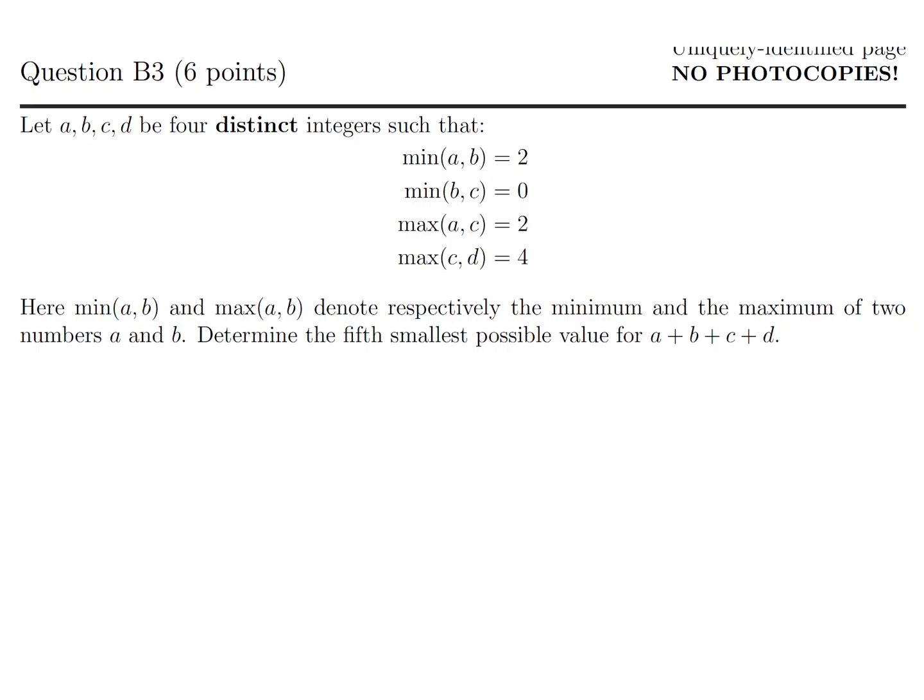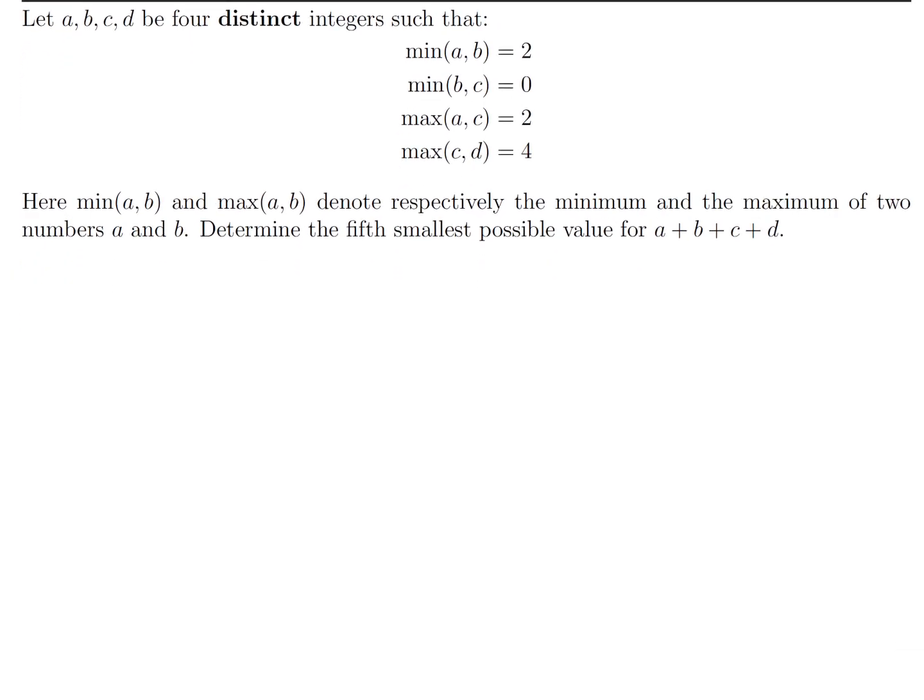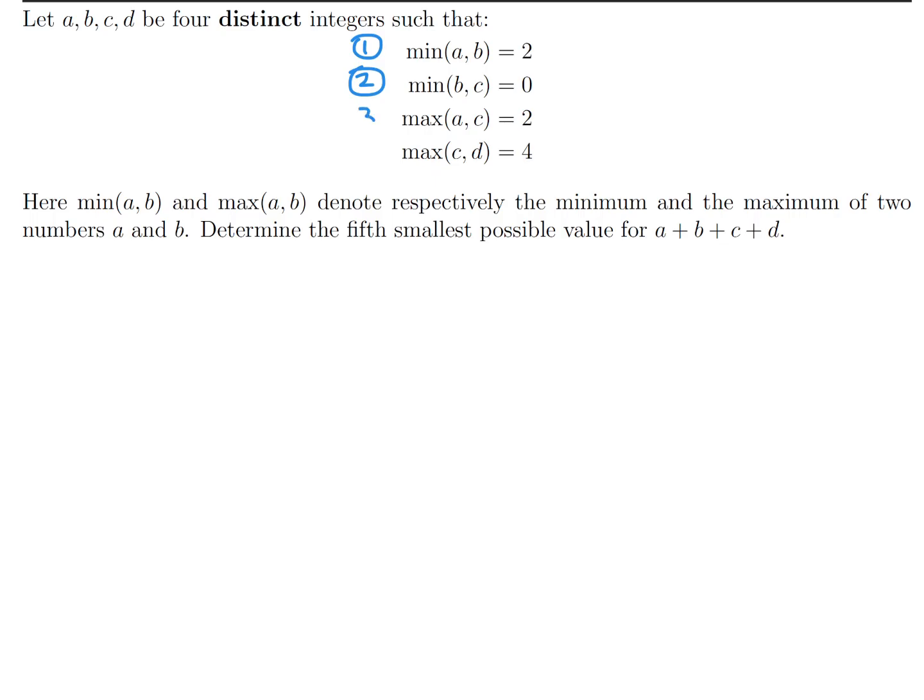Let A, B, C, D be four distinct integers such that the min of A and B is 2, the min of B, C is 0, the max of A, C is 2, the max of C, D is 4. Min of A, B and max of A, B denote respectively the minimum and maximum of two numbers A and B. Determine the fifth smallest possible value for A plus B plus C plus D. So this is going to require some analysis here. I'll label this one, two, three, four, so you know what I'm referring to.